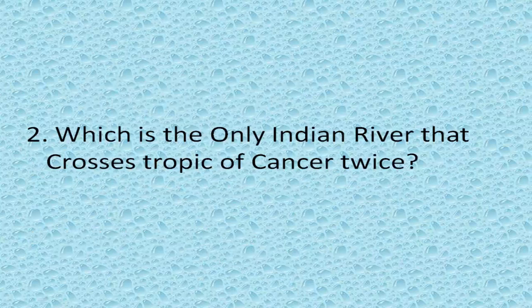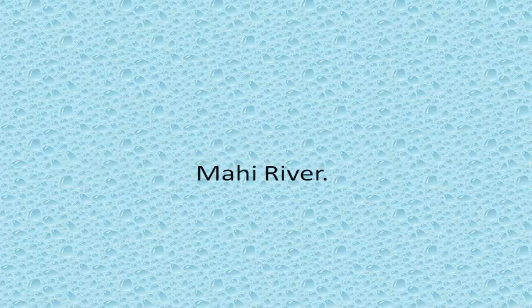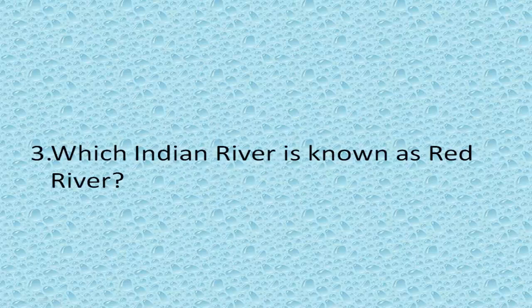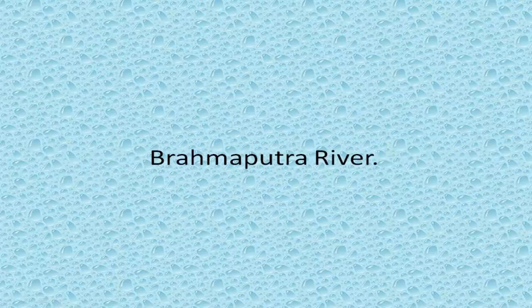Which is the only Indian river that crosses the Tropic of Cancer twice? Mahi River. Which Indian river is known as Red River? Brahmaputra River. It is called so because of carrying red soil along the course of the river.